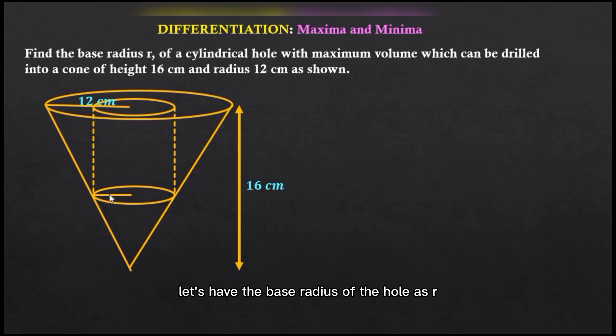Let's have the base radius of the hole as r and the height h. The task here is to find the base radius r of the cylindrical hole that will give us a maximum volume of the hole.